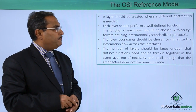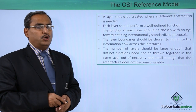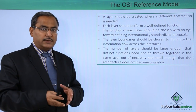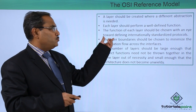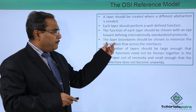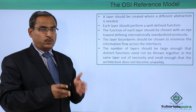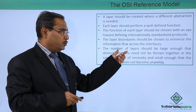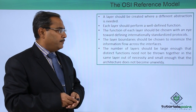A layer should be created where a different abstraction is needed. Each layer should perform a well-defined function — it should not be the case that a layer has multiple dedicated functions, nor that a function is assigned to two adjacent layers. The function of each layer should be chosen with an eye towards defining internationally standardized protocols. Layer boundaries should be chosen to minimize information flow across interfaces, indicating that each layer should work independently. The number of layers should be large enough that distinct functions need not be thrown together in the same layer, and small enough that the architecture does not become unwieldy.